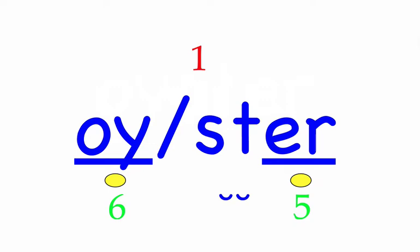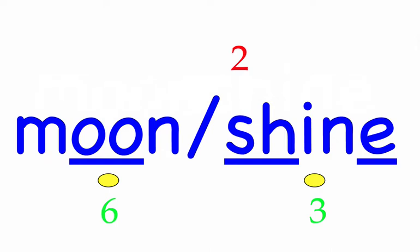Row two. Moonshine. Moonshine is an illegal drink. First syllable: moon, three sounds, M-oo-N. Second syllable: shine, three sounds, Sh-I-N. Moonshine — pause the video, mark the word completely, then advance the video screen.